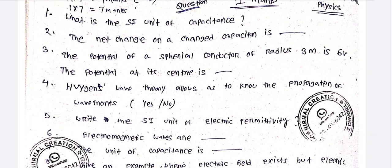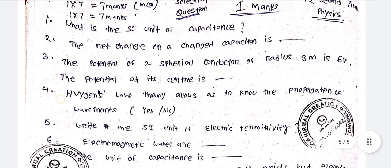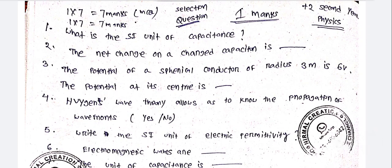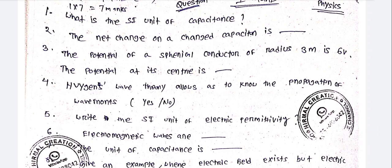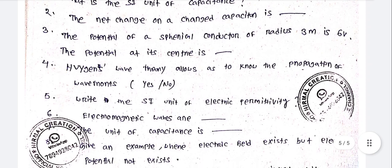Subscribe to the channel and enable notifications. What is the SI unit of capacitance? If you have the SI unit, you have to learn this. The net charge on a charged capacitor is dash. The potential of a spherical conductor of radius 3 meters is 6 volts. The potential at its center is dash.